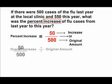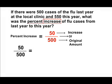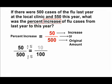Now that we have a fraction — 50 over 500 — there are a couple of options. We know that a percentage is out of 100. In this case, it is very simple to reduce the number 500 to a denominator of 100 by reducing by a factor of 5. Doing the same thing to the top, 50 divided by 5 gives us 10. And we should know that 10 out of 100 is equal to 10%.